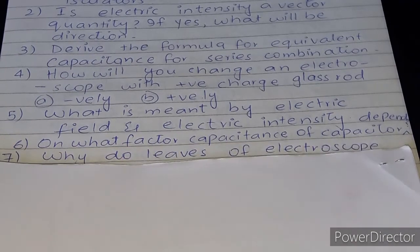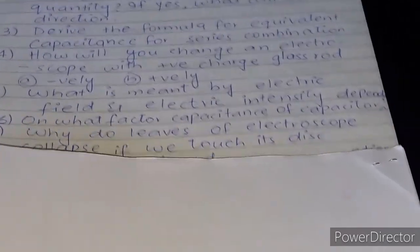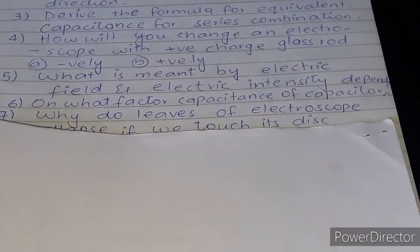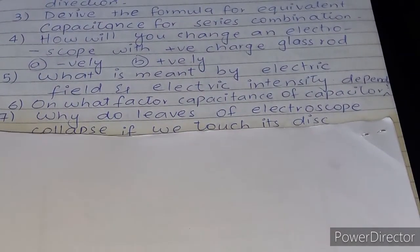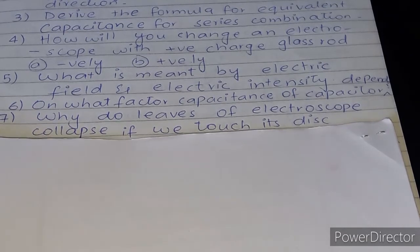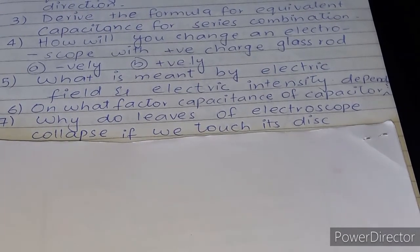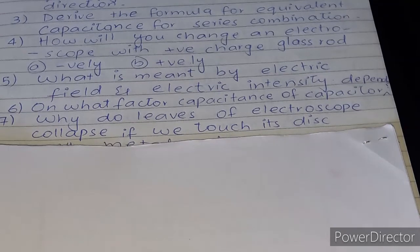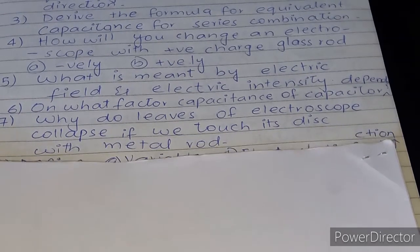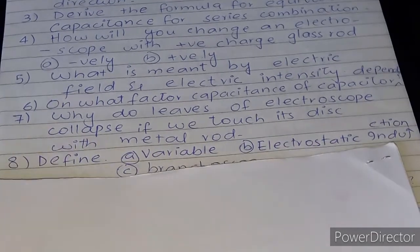Question number 7: Why do leaves of electroscope collapse if we touch its disk with metal rod? Question number 8: